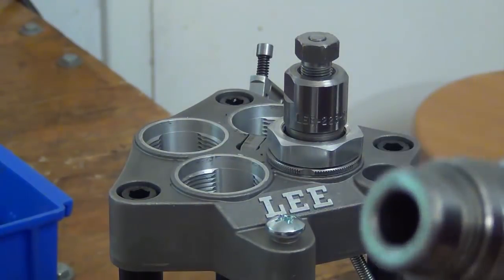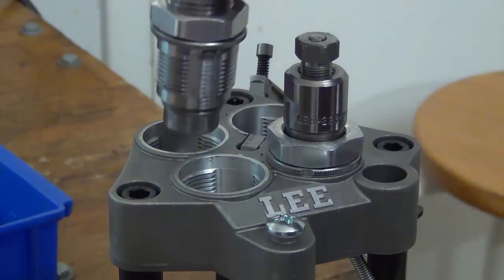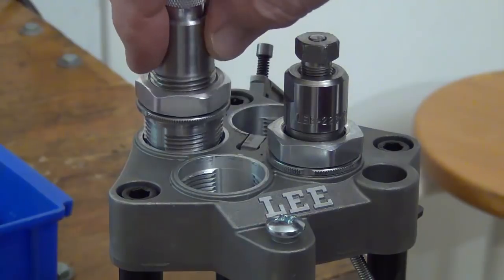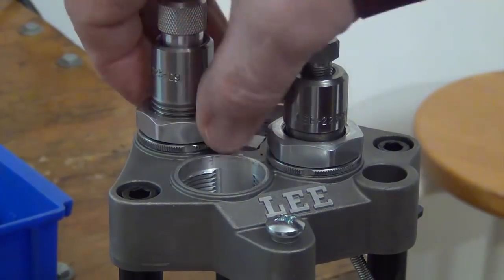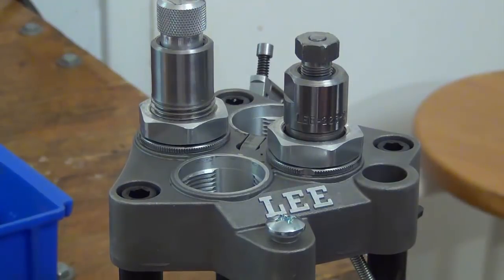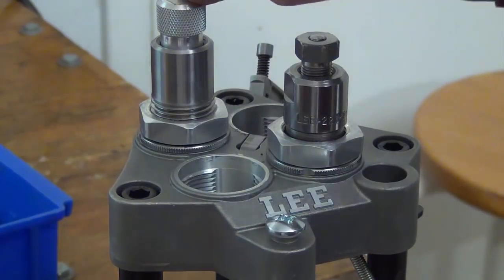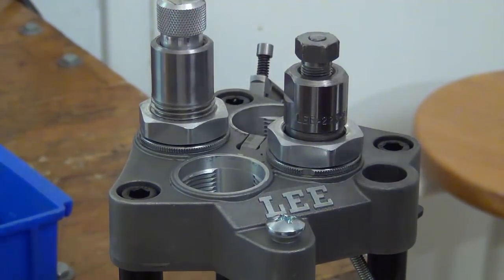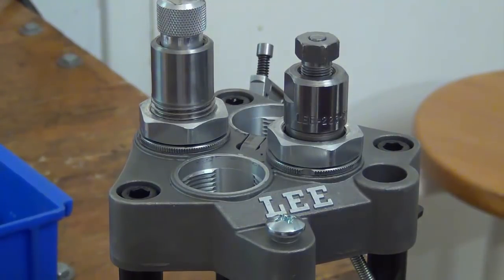I'm reloading 5.56x45 and the second die that I put in is the seating die. And I also adjust that so that it just touches the plate and then back the seater stem out so that you can adjust that later on to get the right cartridge length.